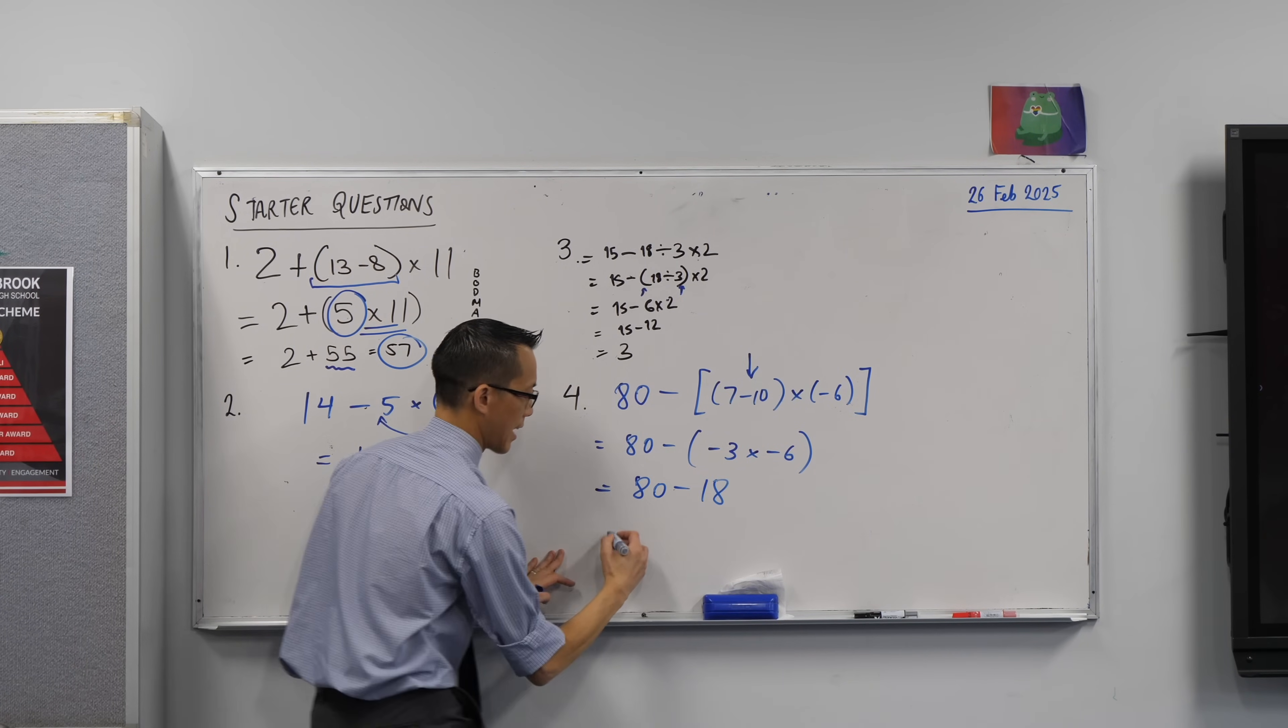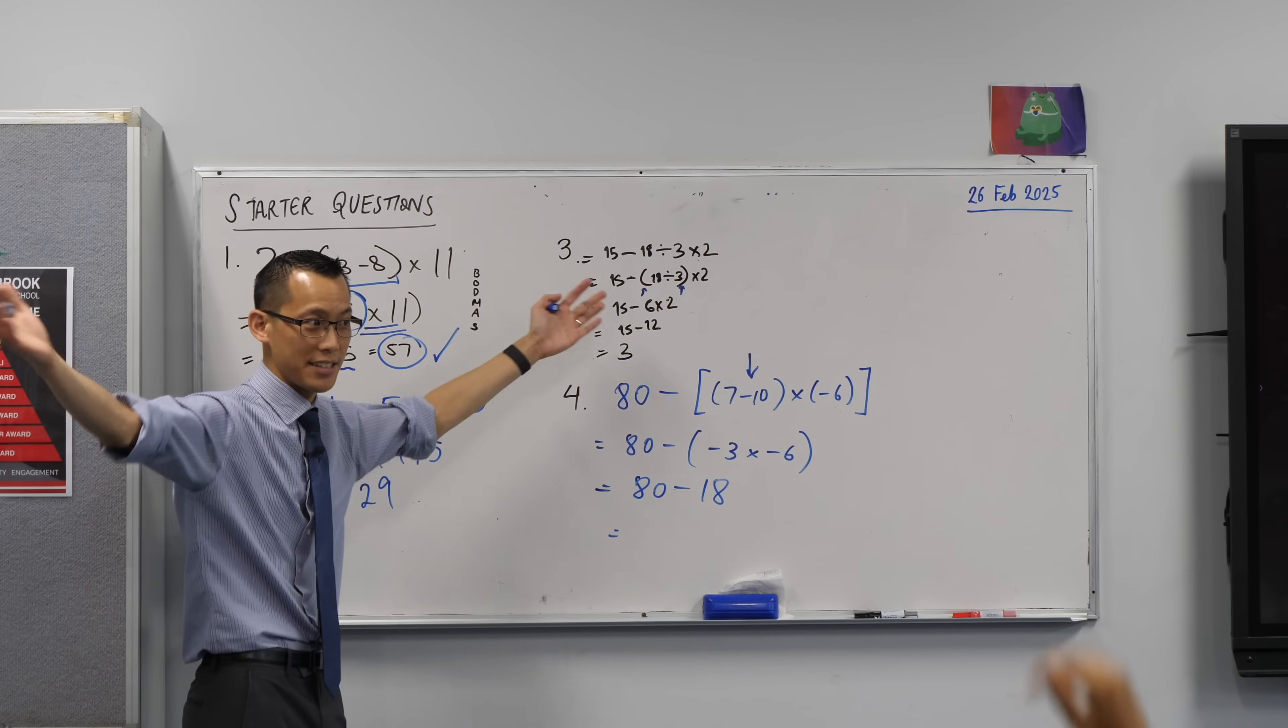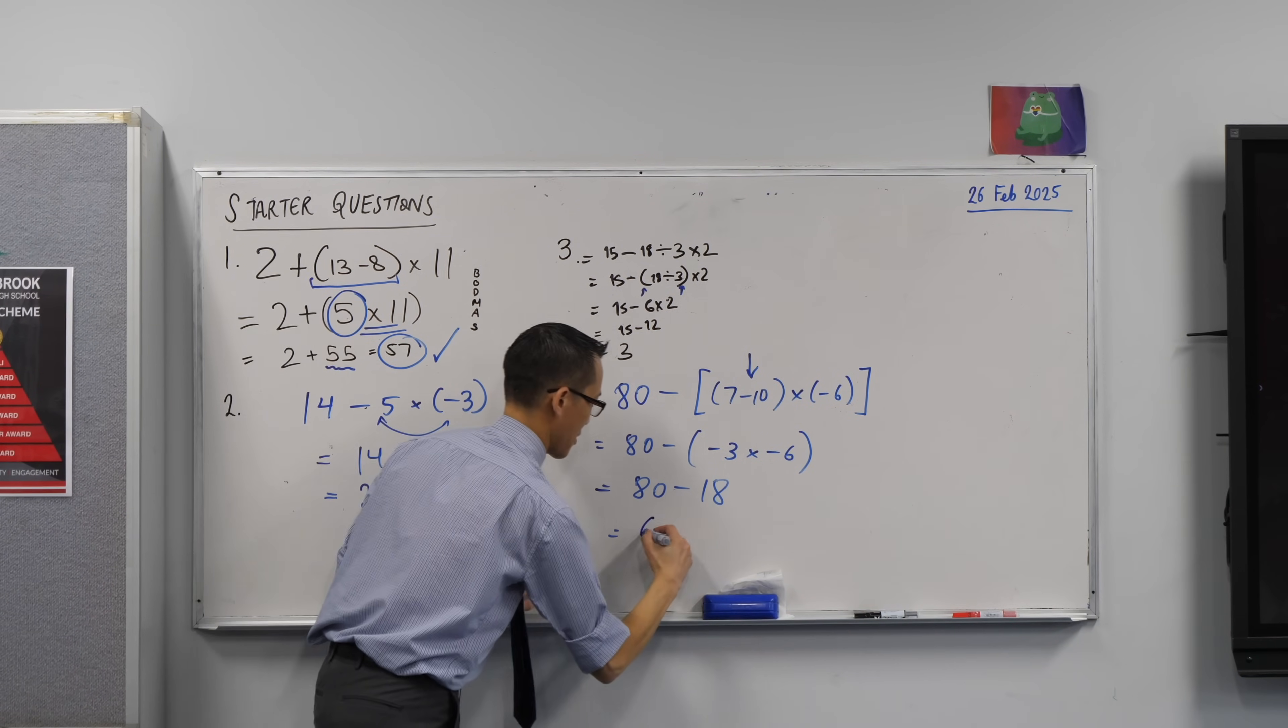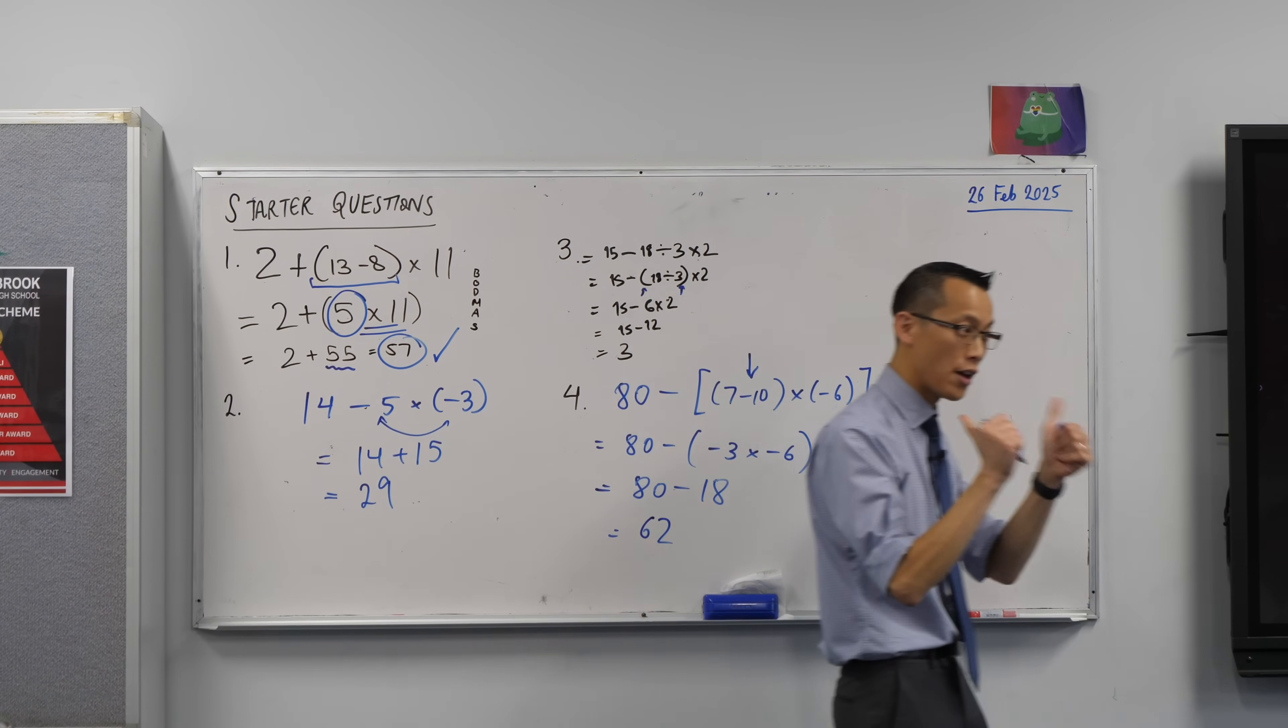Those double negatives again are cancelling, and then can we say it all together? Final answer? 62. 62. Awesome. Okay. Happy times. Would you please rule that off? Well done.